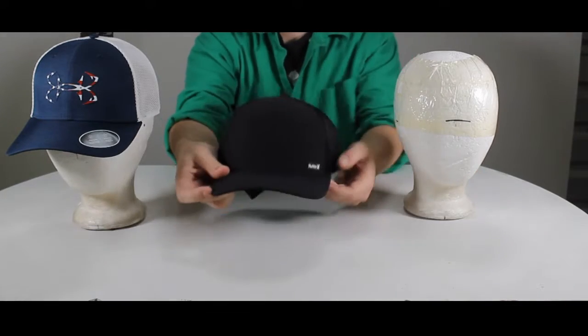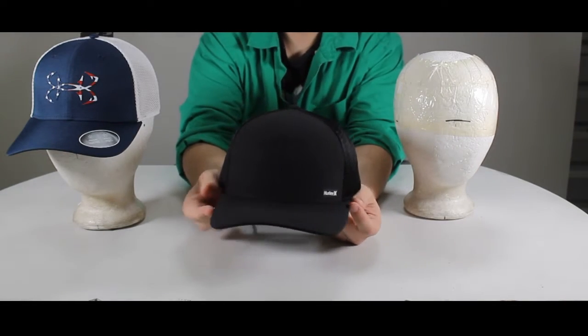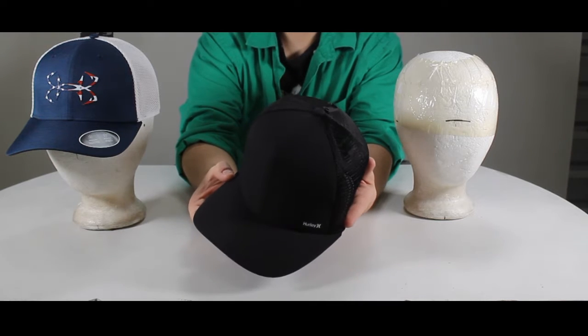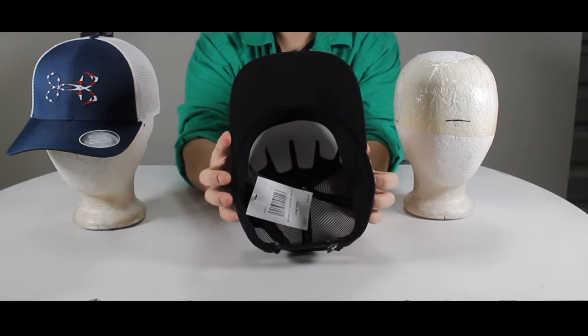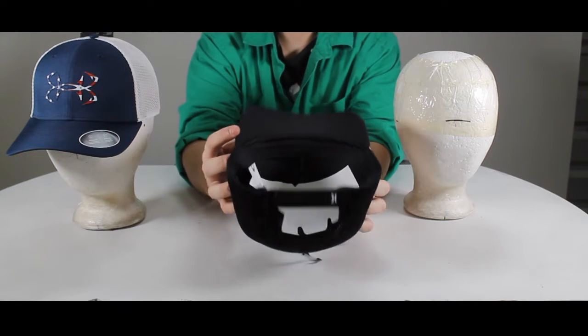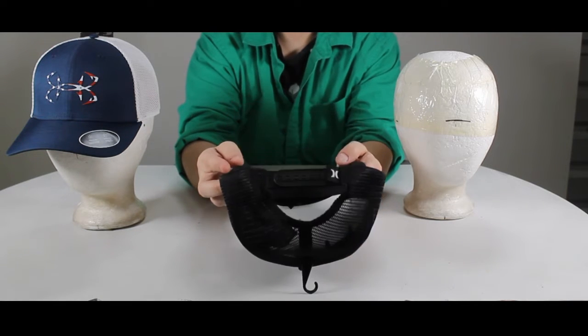Next, the Hurley league hat in black. Featuring a subtle and stylish Hurley logo, this is your more traditional trucker hat with the adjustable snapback closure and tonal mesh. Also includes a dry fit sweatband and comes in a wide variety of colors.